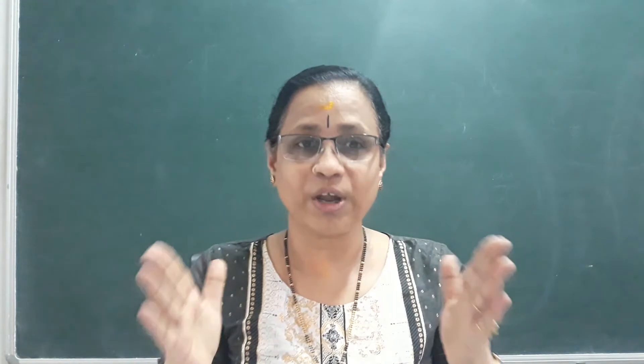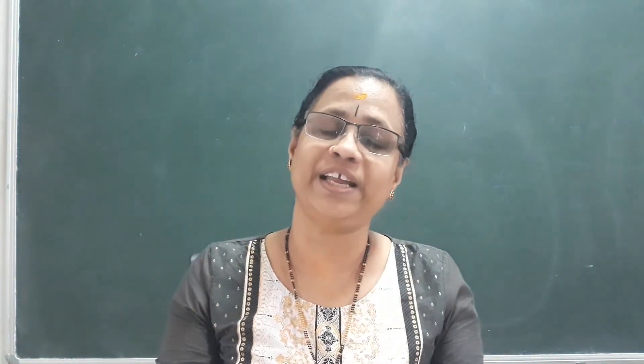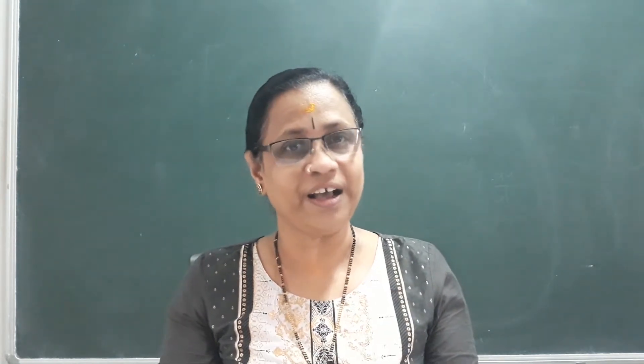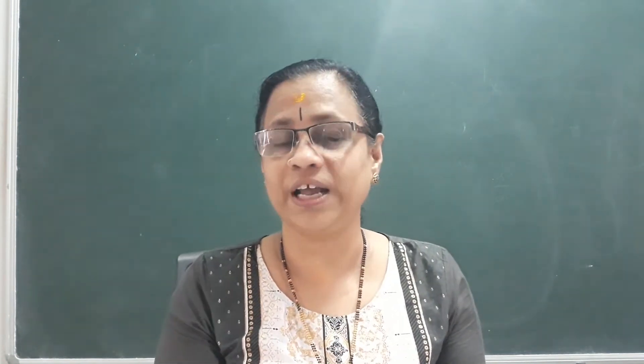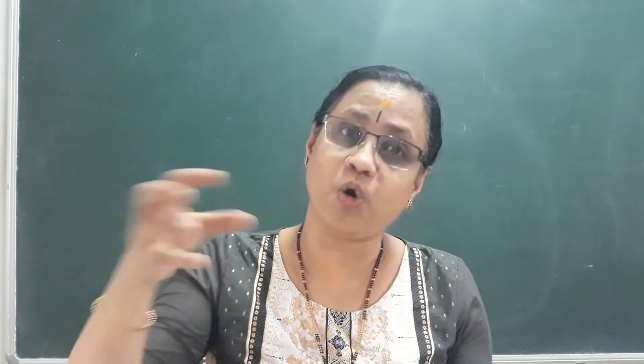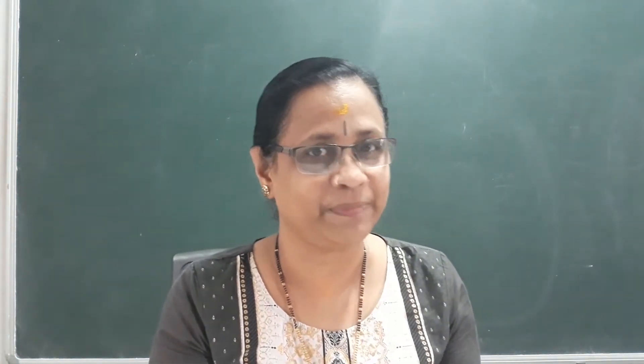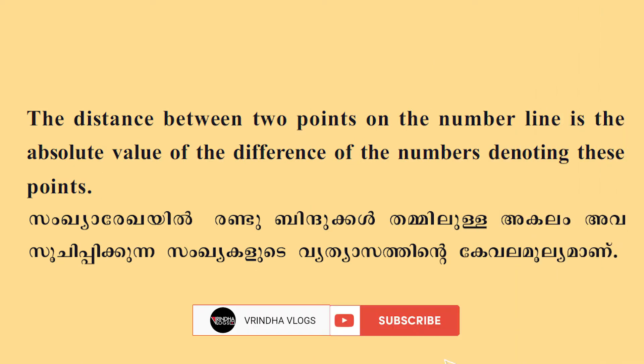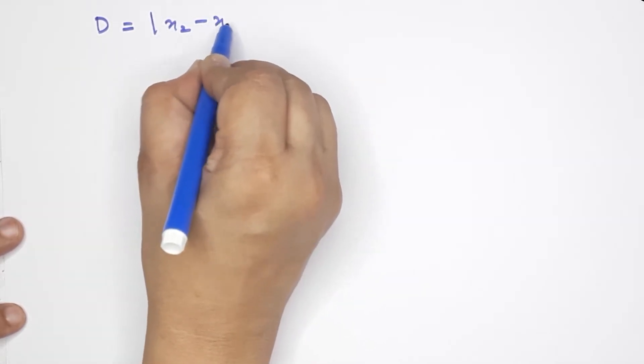That is the distance. The distance is not negative — it is positive. If we have negative 1, we find the absolute value. That is why we find absolute value. The distance between the points on the number line is the absolute value of the difference of the numbers denoting these points. In this class, we find the distance using the formula modulus of x2 minus x1.